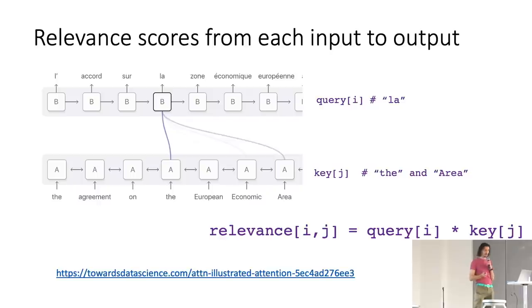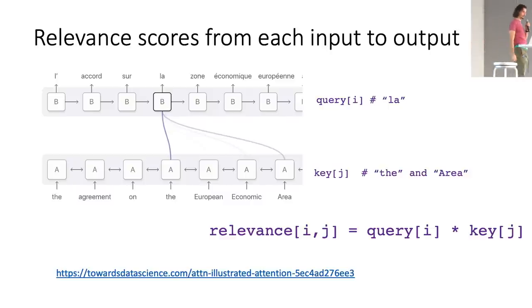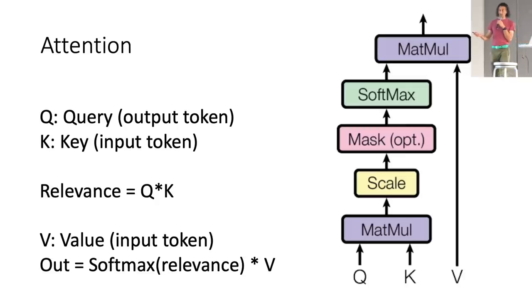And the way it works in the attention, or sorry, in the transformer model, the way they describe it, is with query and key vectors. So for every output position, you generate a query. And for every input you're considering, you generate a key. And then the relevant score is just the dot product of those two. And to visualize that, you first, you combine the key, the query and the key values. And that gives you the relevant scores. You use a softmax to normalize them. And then you do a weighted average of the values, the third version of each token, to get your output.